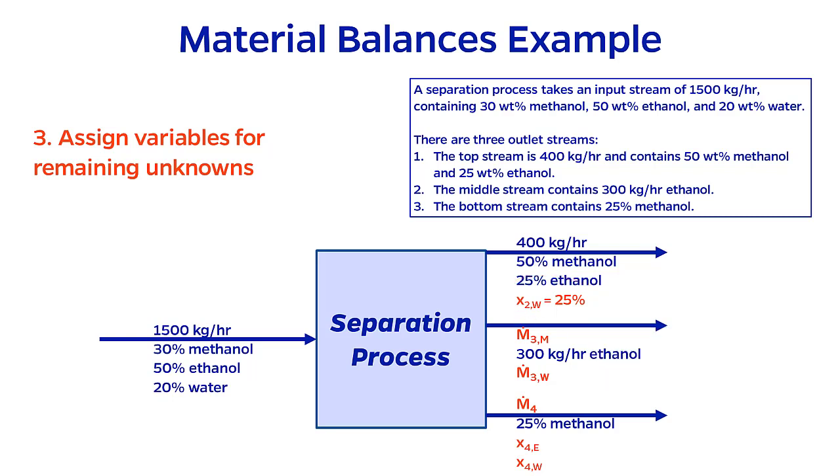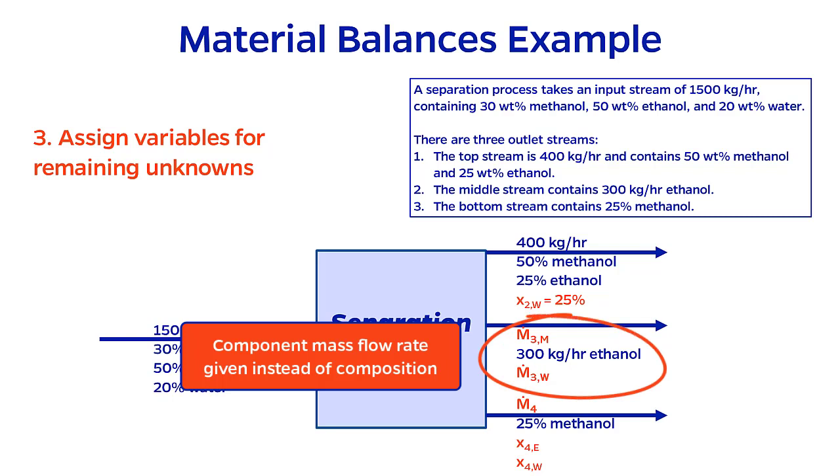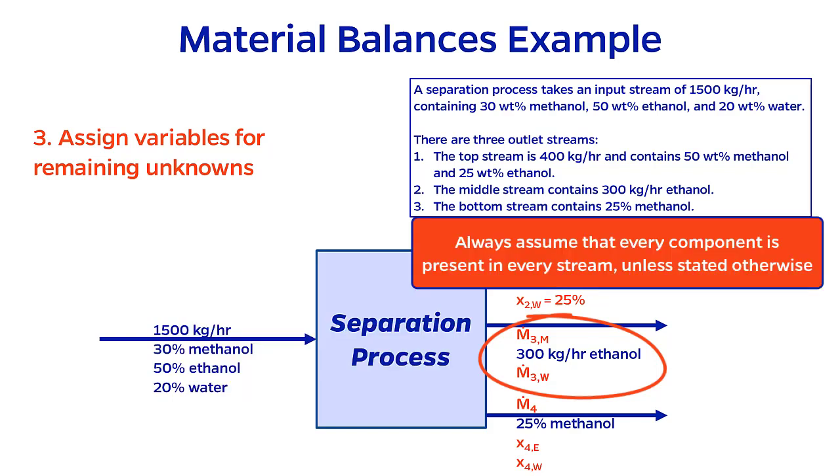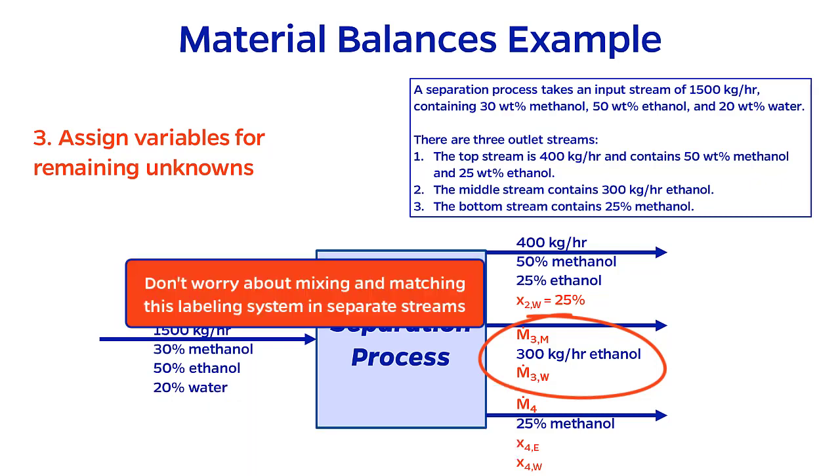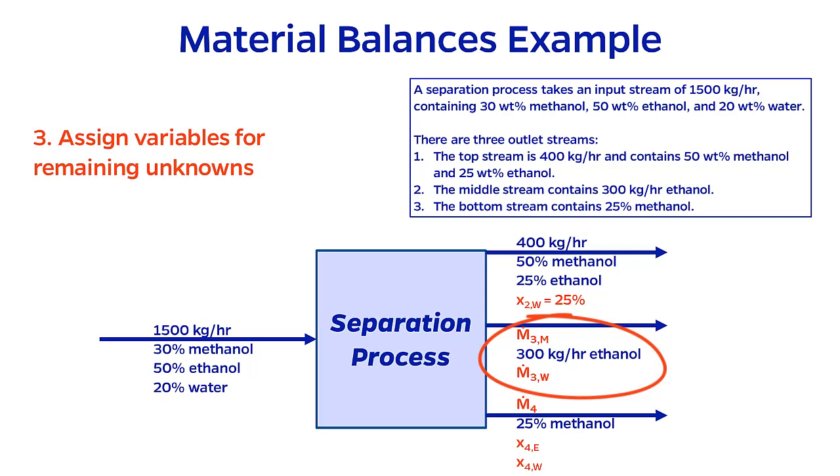In the middle stream, I am given a component mass flow rate for ethanol instead of the composition. However, unless the problem directly states otherwise, I should assume that every stream contains every component. So I am going to stick with the established convention of labeling this stream with flow rates instead of compositions. It is not an issue to mix and match these conventions among the different streams. Just remember that the subscripts M and W here mean that their individual component molar flow rates, not total.